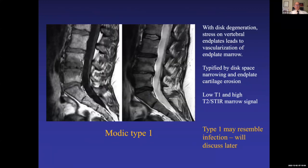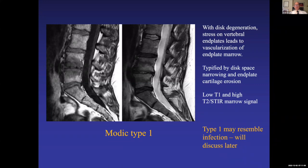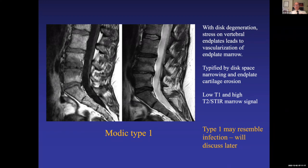An example of Modic Type 1: at the L4-5 level the disc space is narrow. On the T1 image on the left and T2 image on the right, you can see disc space narrowing, irregular end plates, lower T1 signal adjacent to the end plates, and a little higher T2 signal next to the end plates. This is Modic Type 1, representing vascularization of the end plate marrow and changes in the marrow itself.